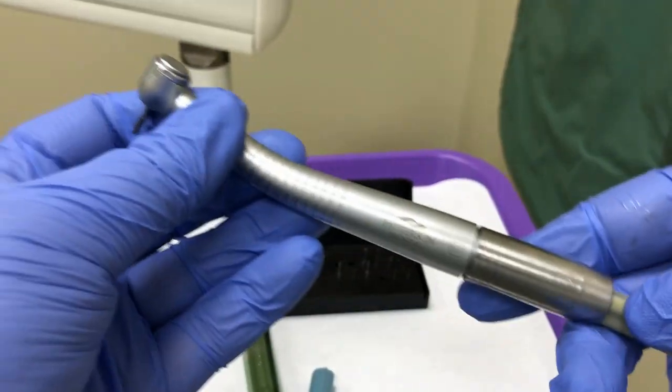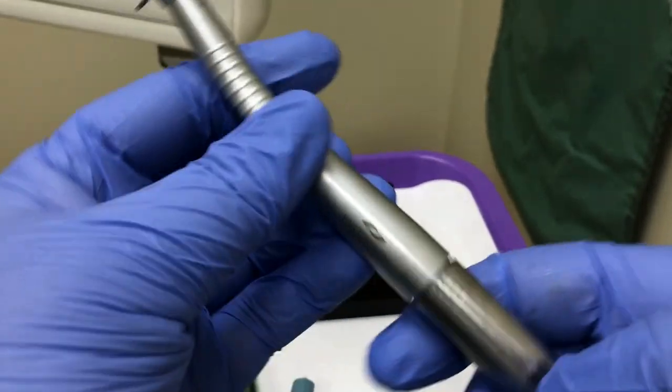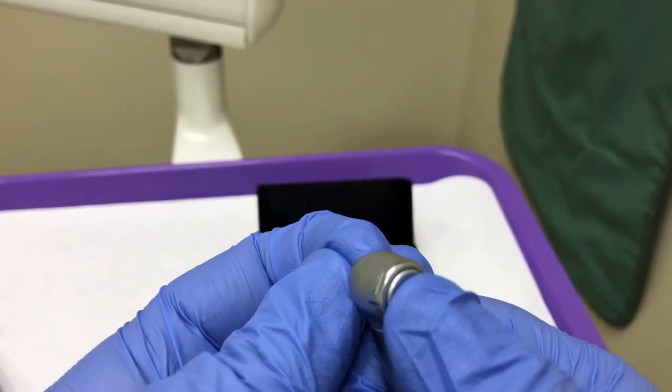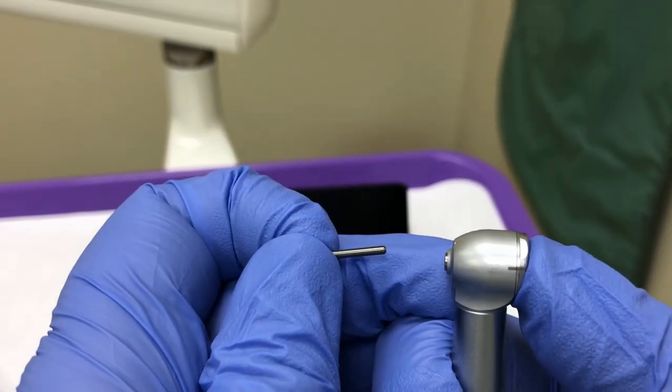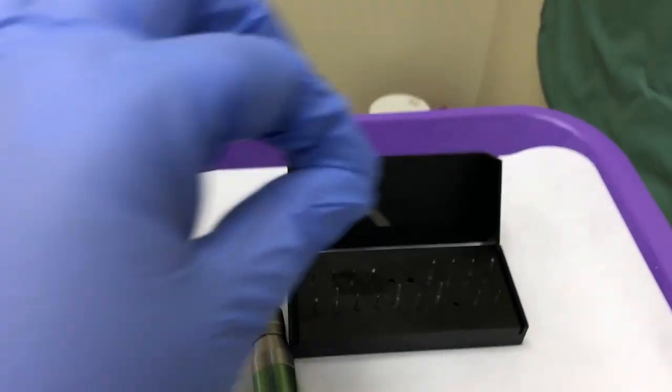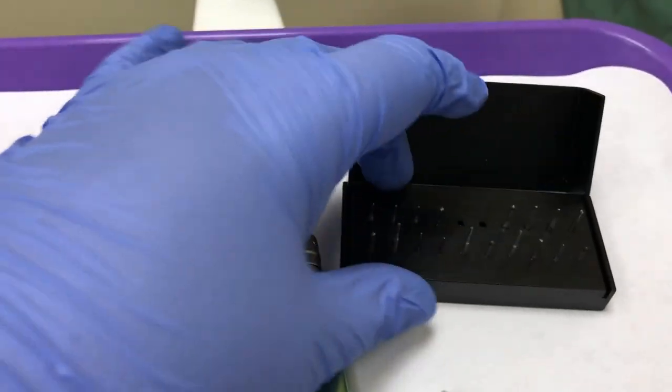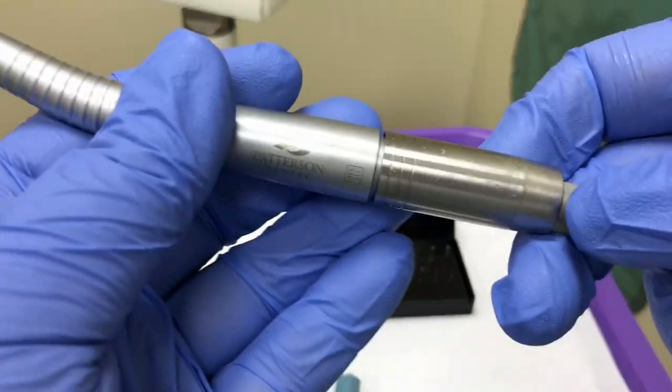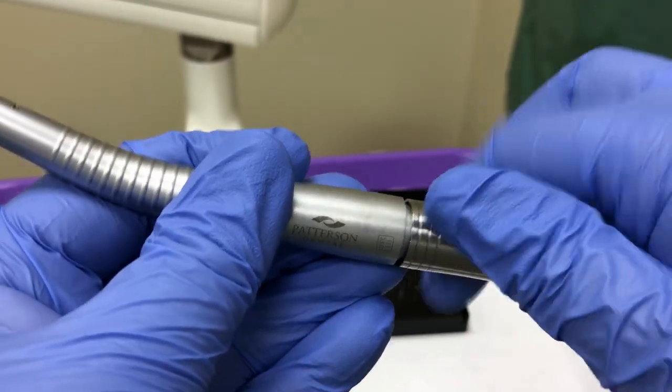To disassemble the high-speed handpiece, remove the burr by pushing on the back of the handpiece to unlock it and pull the burr firmly out. Place the burr into the burr block and then the entire burr block will be taken to sterilization. Unscrew the coupler to release the handpiece from the hose.